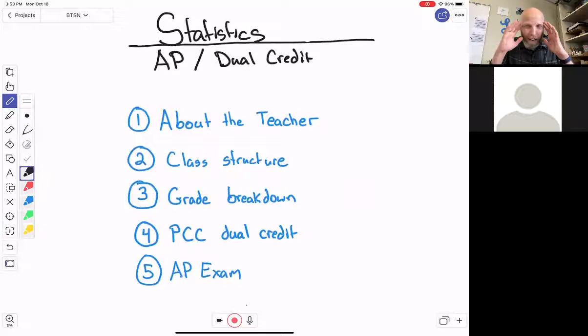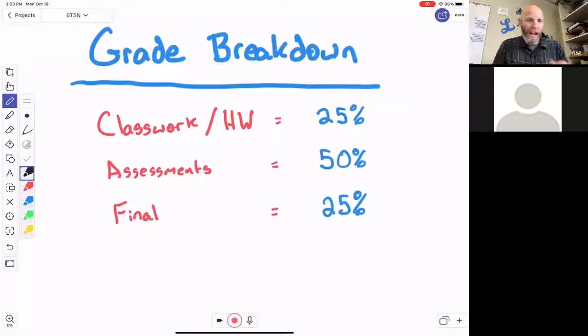So that's a little bit of the class structure just so you get an idea of what the students are walking into. Let's look at the grade breakdown real quick just so you have a semblance of what's going on. The classwork homework accounts for 25% of the grade, so a decent chunk of the grade, but obviously a lot more falls on the assessments.